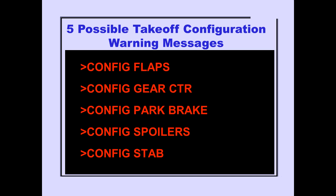The five possible takeoff configuration warning messages are: Configuration Flaps, which indicates the flaps are not in a takeoff position; Configuration Gear Center, which indicates the body gear are not centered; Configuration Parking Brake, which indicates the brake is set; Configuration Spoilers, which indicates the speed brake lever is not in the down detent; and Configuration Stabilizer, which indicates the stabilizer is not in the takeoff range.